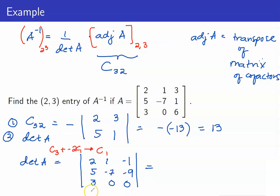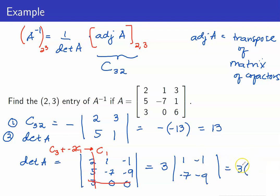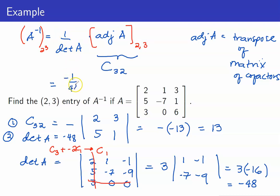Therefore, this is 3 times negative 9 minus 7, which is negative 16. So the determinant of A is negative 48. Going back, the (2,3) entry of A inverse is 1 over det(A) times C_3-2. That's negative 1 over 48 times 13, giving us negative 13 over 48.